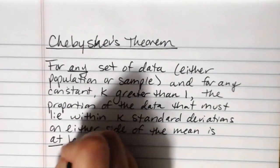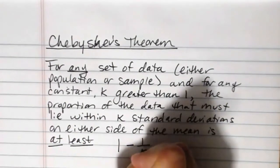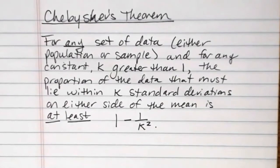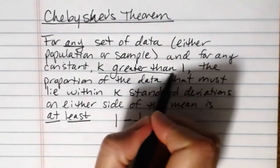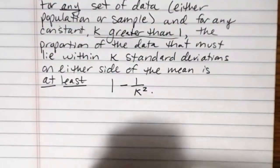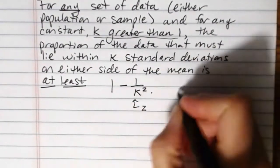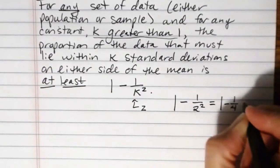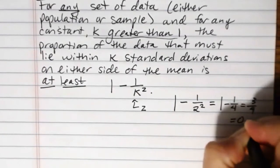And that's all well and good, but what the heck does that mean, right? So basically, if we picked a number for k, and since k has to be greater than 1, let's say that we pick 2. So if I put the number 2 in here, so if I did 1 minus 1 over 2 squared, that's going to be 1 minus 1 fourth. 1 minus 1 fourth is 3 fourths, or 0.75, 75%.